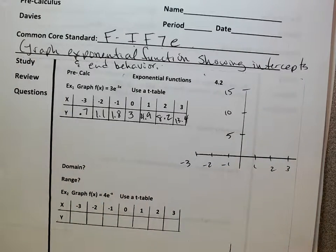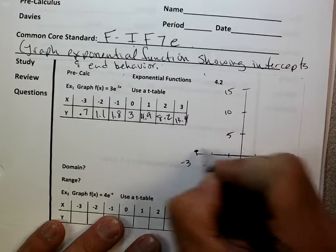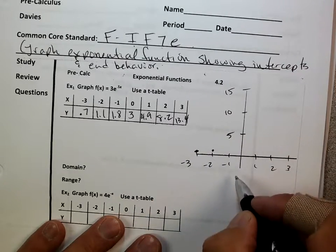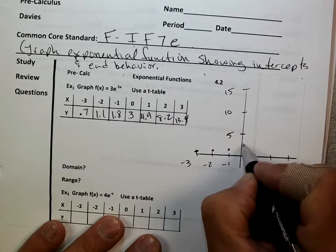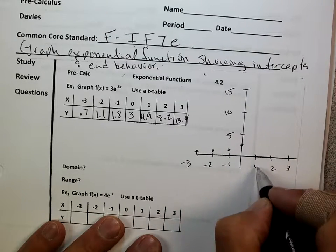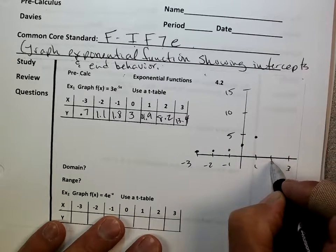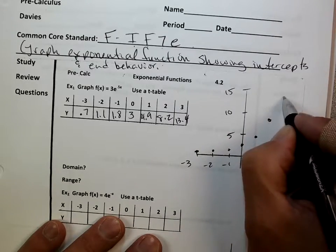And so if I just do a dot by dot, and then we'll try and put in the graph the best we can. 0.7, maybe about 1.1, it grows gradually, but pretty soon it's going to grow pretty well, that's why it's exponential. 3 might be here, 4.9, and you're going to hopefully see a nice curve, 8.2, and then 13.